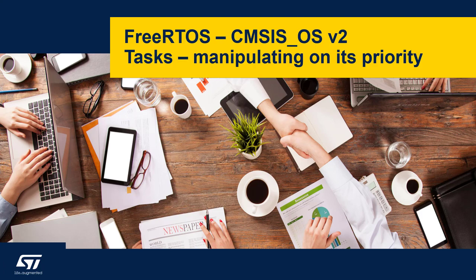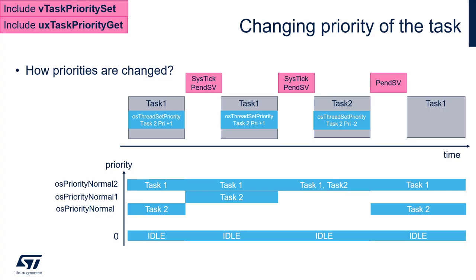Manipulating the priorities of tasks. Let's do some practice. We'll prepare the priority change lab. To do this, we need to include two components within FreeRTOS config: vTaskPrioritySet and uxTaskPriorityGet, to have the possibility of using both functions to set and to get the priority of the task. Here is the illustration of the final effect we would like to achieve within our exercise.